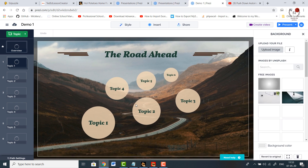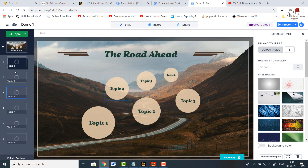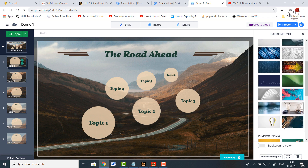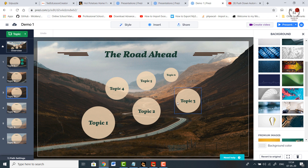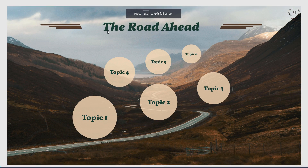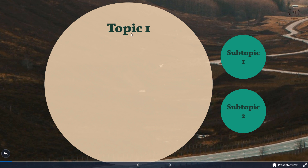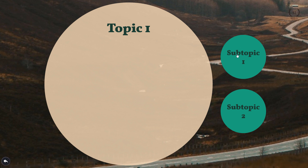On the left hand side you can see the various slides. On the right hand side there are free images you can use. To understand how it looks, click the 'Present' tab. For example, 'The Road Ahead' is the title. When you click on a topic, it interactively opens a new page — similar to a video transition. Click on a subtopic and it opens another slide where you can put your content.